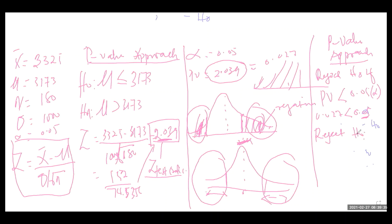If we reject H0, the conclusion is that we are rejecting that the mean is less than or equal to 3,173. If that null hypothesis is not supported, we conclude that the mean credit card balance for undergraduate students has continued to increase over the past years. This is the p-value approach.